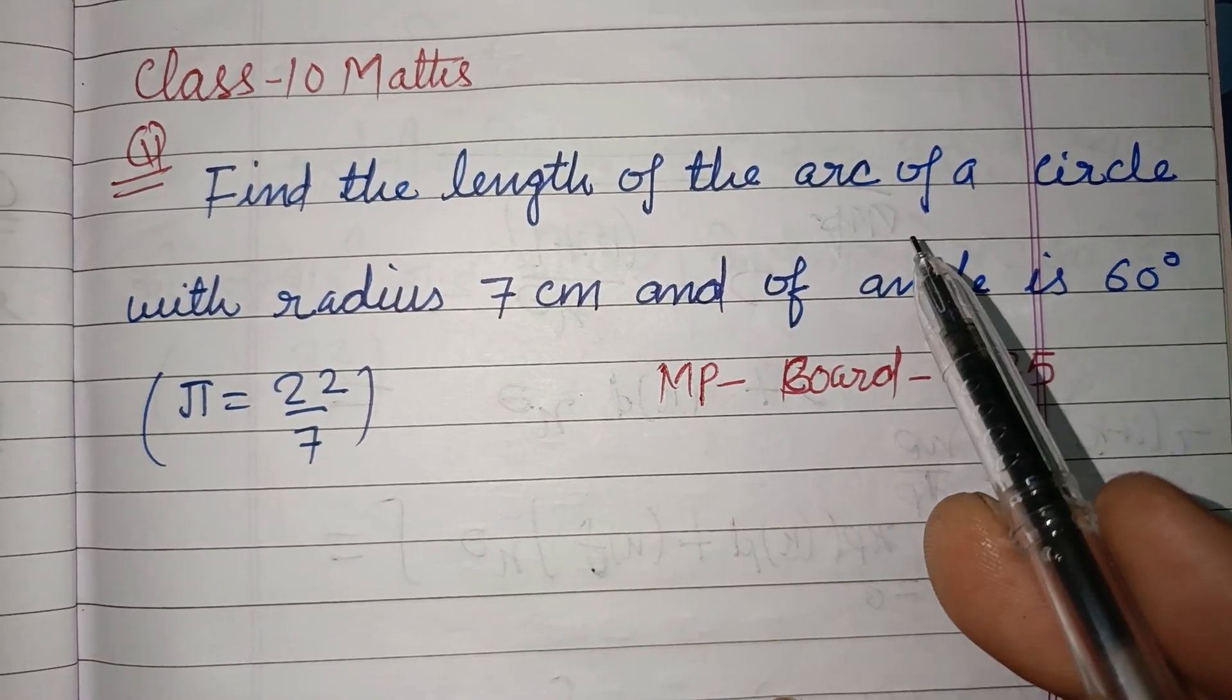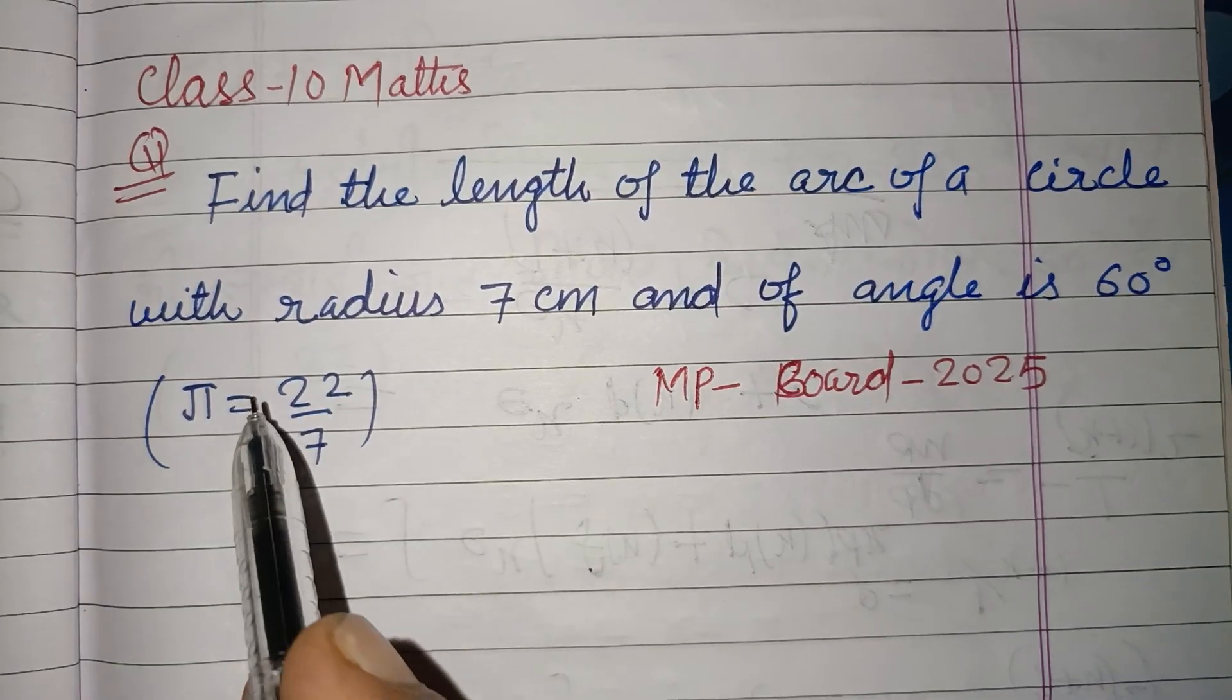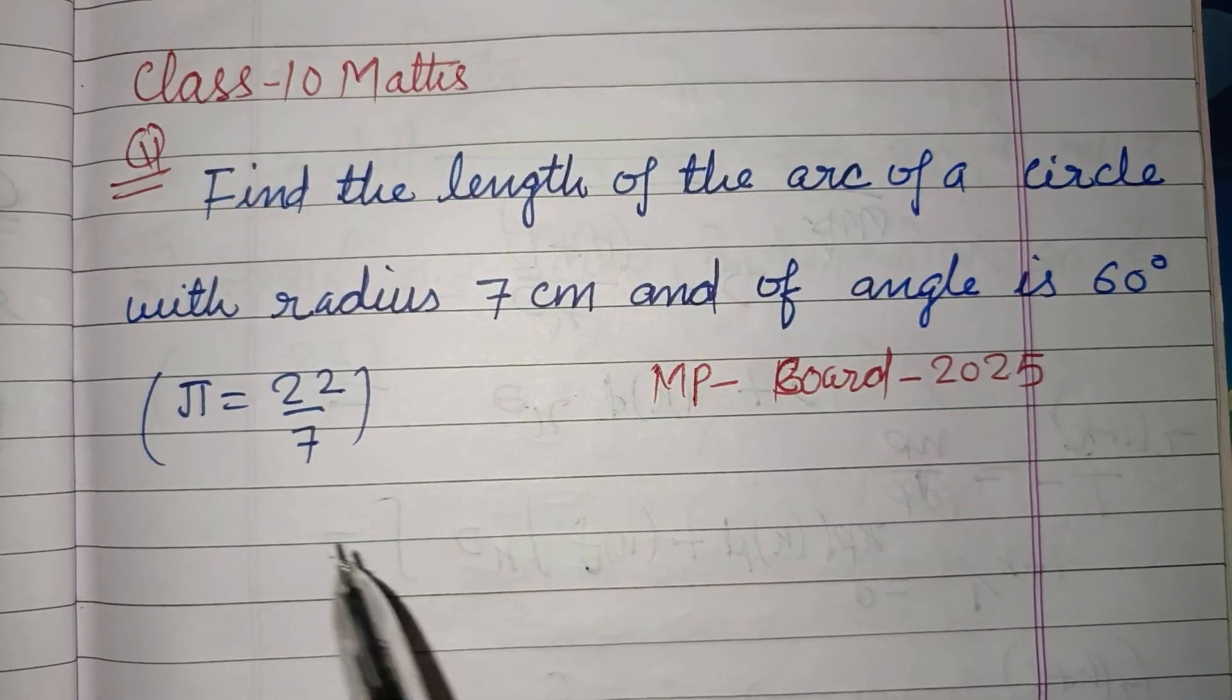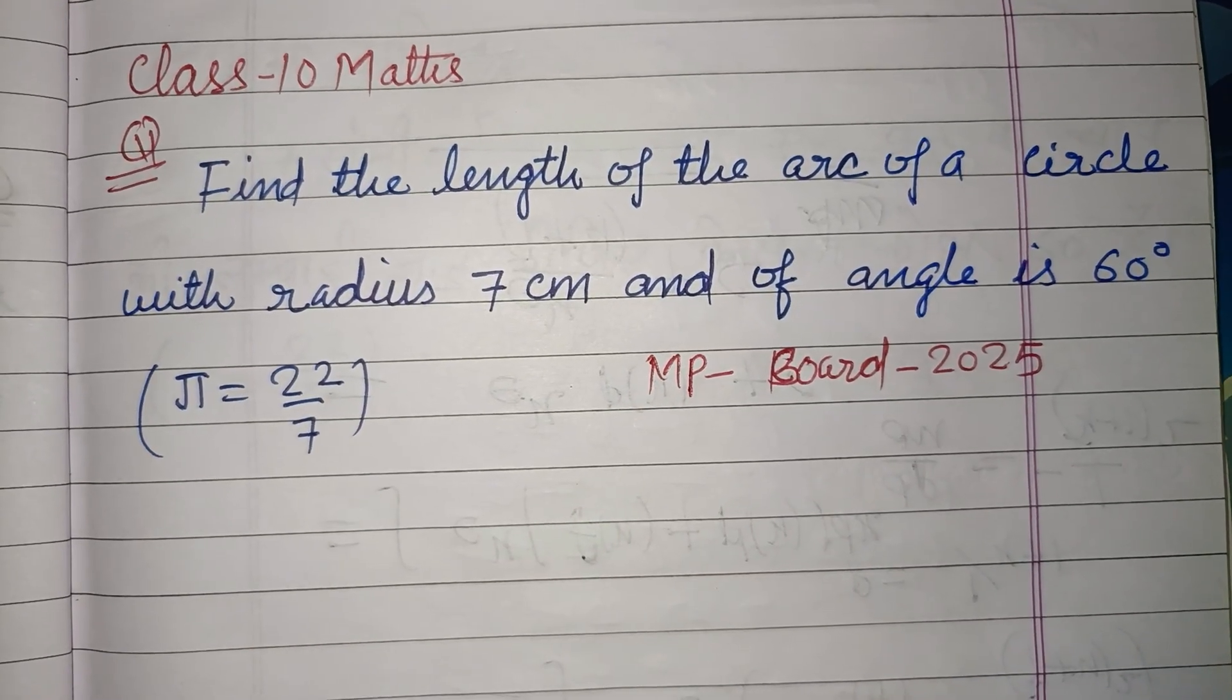Pi is given as 22 over 7. So students, this is the circle whose center is O.